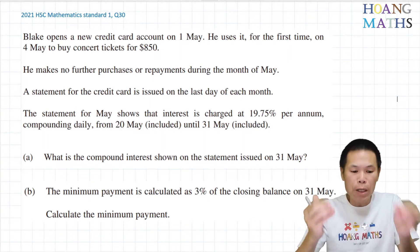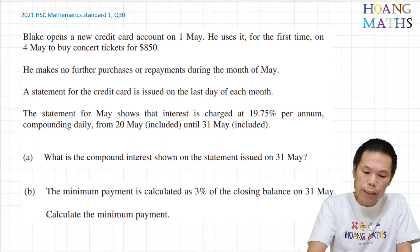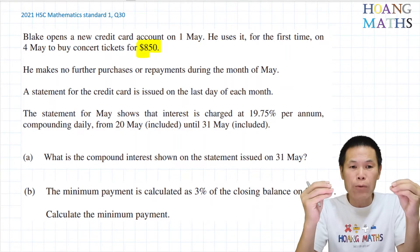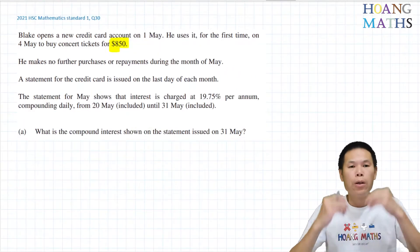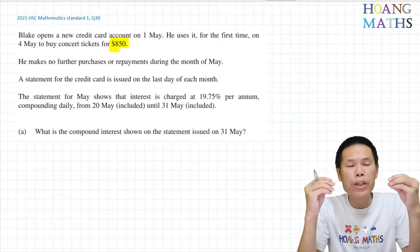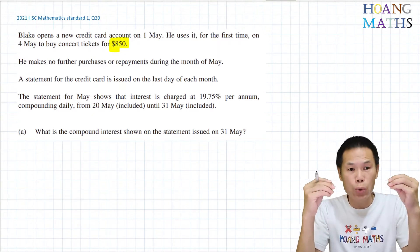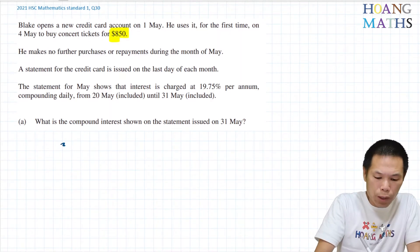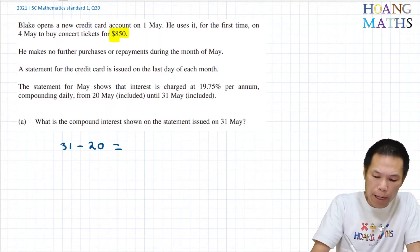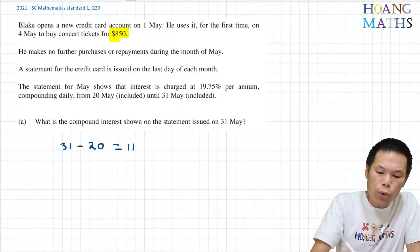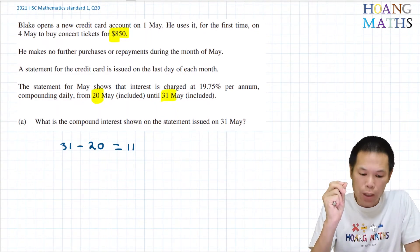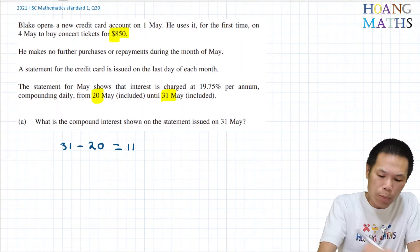So on the 31st of May, the statement will show the amount that he's owed — that is $850 plus the interest. But to work out the interest, we use the compound formula. First of all, we need to work out how many days there are between the 20th of May and the 31st of May, including both of them. So we just go 31 minus 20, which is 11. But then we need to include the 20th of May as well, so that gives us 12 days.